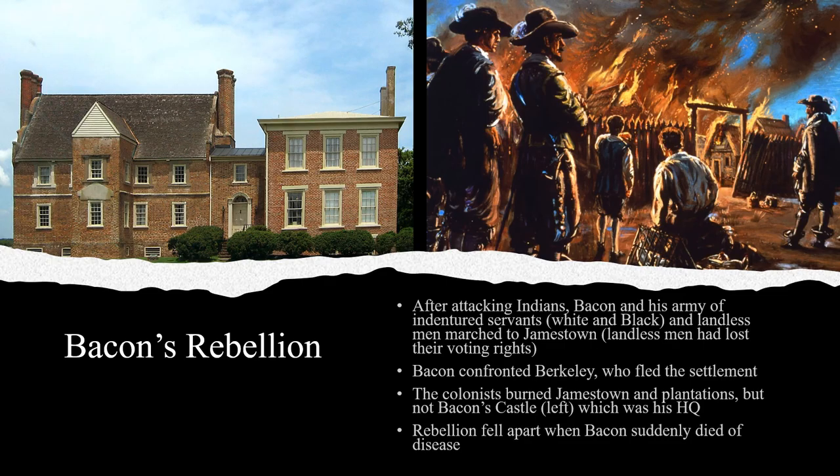In response, Nathaniel Bacon, a plantation owner who had previously been snubbed by Berkeley, led the colonists on a campaign against the Indians, in which they violently forced most of the Native Americans — even the ones that had supported them — out of the state and into Maryland. After defeating the Indians, Bacon turned his soldiers eastward, attacking the plantations around Jamestown. Bacon's army, which included free colonists as well as white and black indentured servants, even burned Jamestown, forcing Governor Berkeley and his gentry followers to flee to sea.